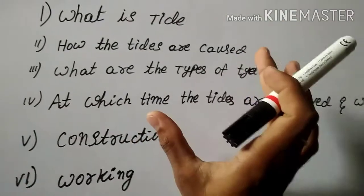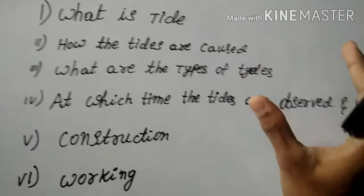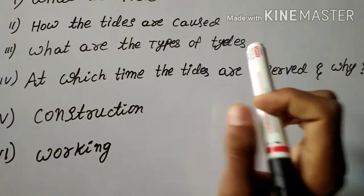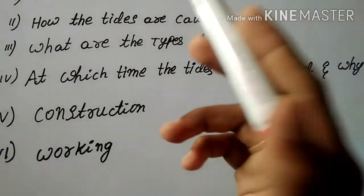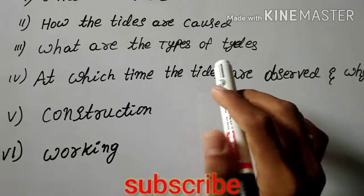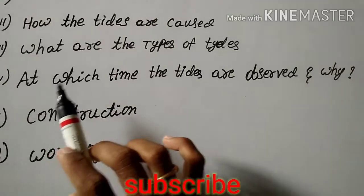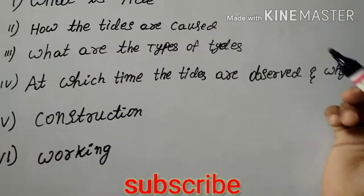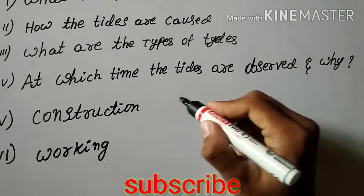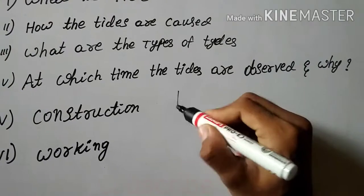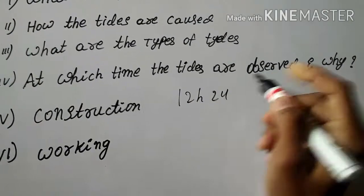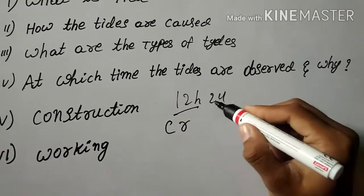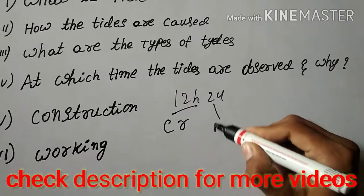The duration from the maximum level to the minimum water level is called the falling off tide, and the duration between the minimum level to the maximum water level is called the flood tide. On an average day, the tides are observed on 12 hours and 24 minutes — 12 hours because of earth rotation and 24 minutes because of the moon orbit.